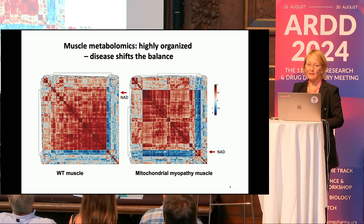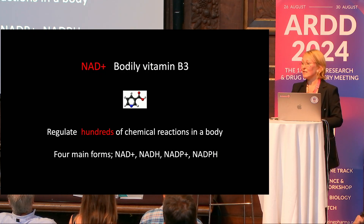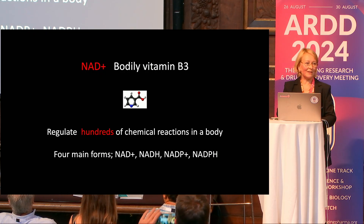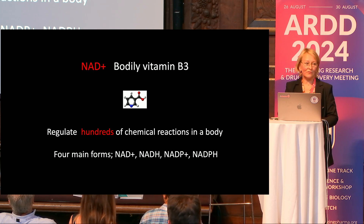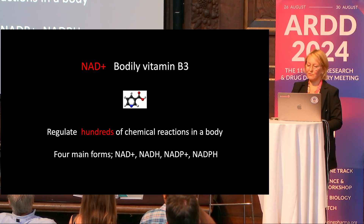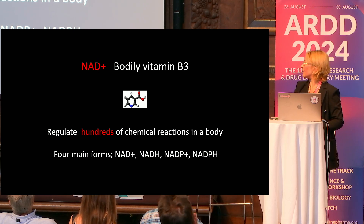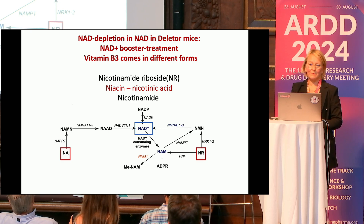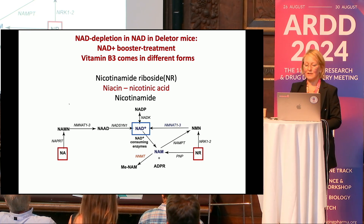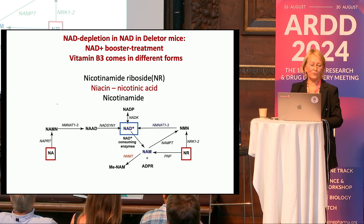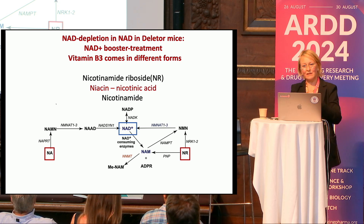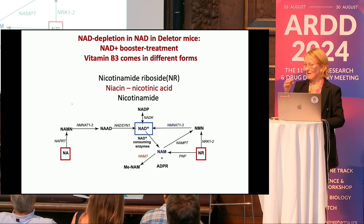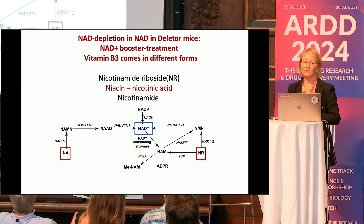NAD is the bodily form of vitamin B3. It regulates hundreds of different metabolic reactions and has four different forms: NAD, NADH, NADP, and NADPH. You can increase NAD by different kinds of vitamin B3, and they enter the pathways via slightly different routes and partially different enzymes. So it depends on what kind of booster you choose and how you enter different tissues.